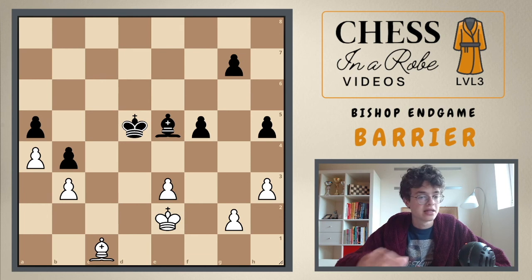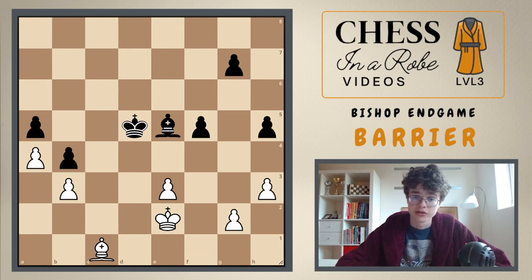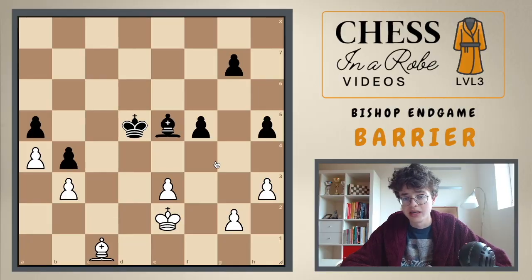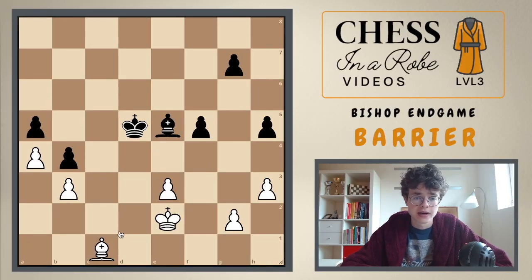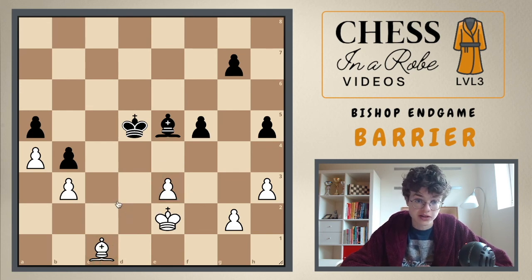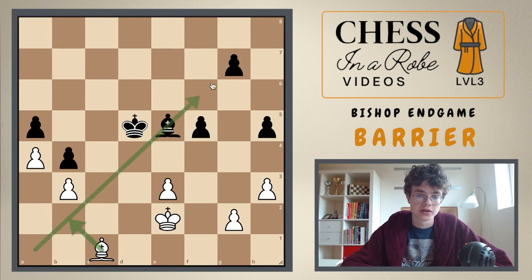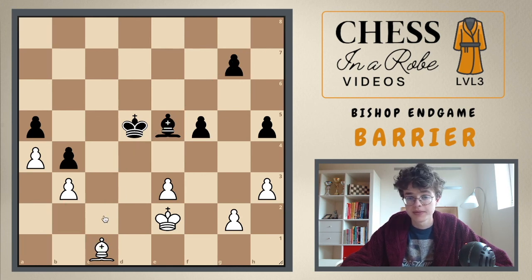It's all about piece activity and controlling squares. Without further ado, let's get into it. So this is the first example. The material is equal and it's white to move, but white has a problem. This bishop has almost no scope because this pawn is in the way, and there is no way to activate the bishop because as soon as the white bishop goes onto this diagonal, he will just be losing a piece.